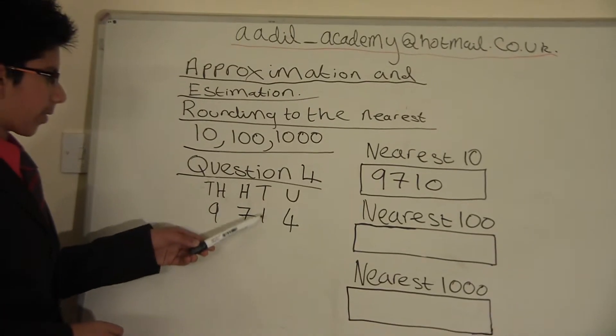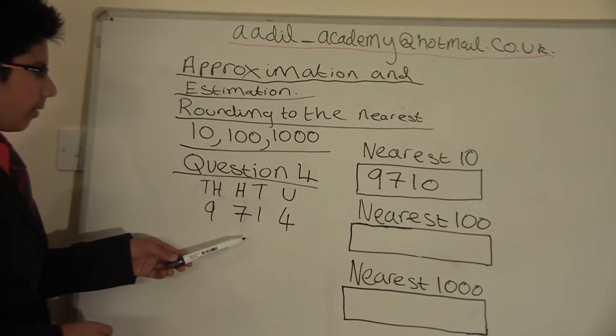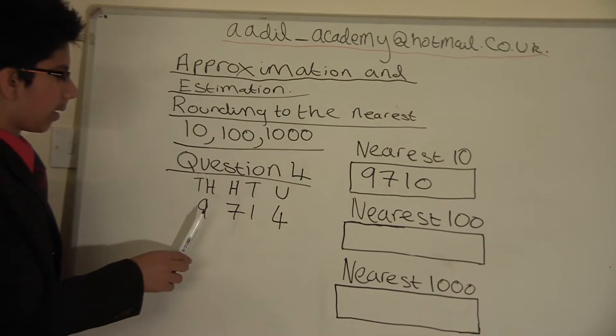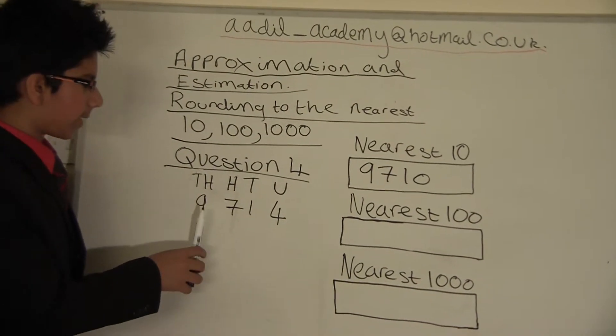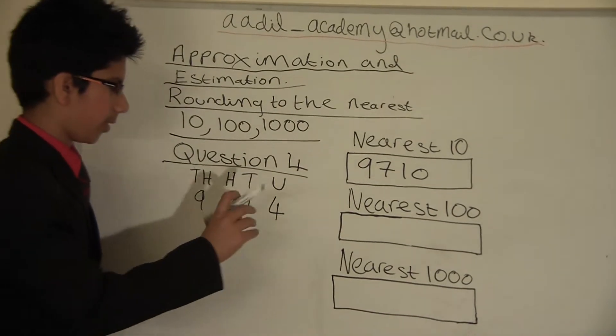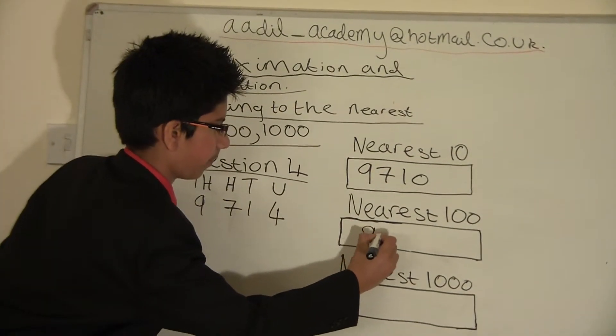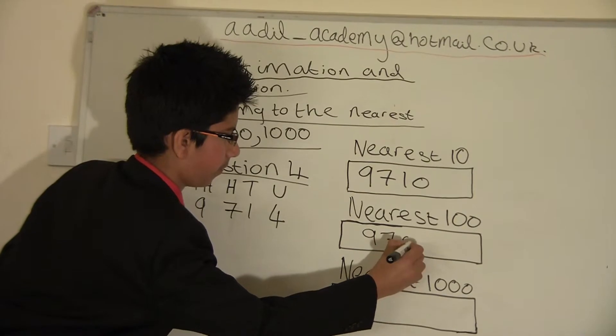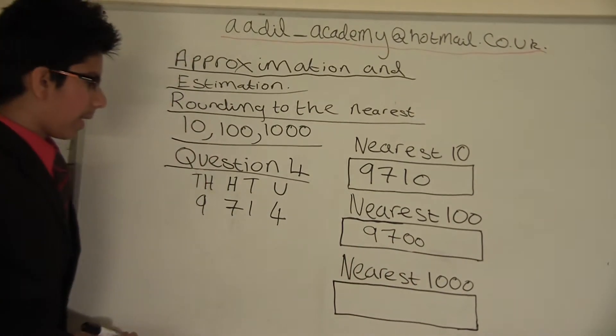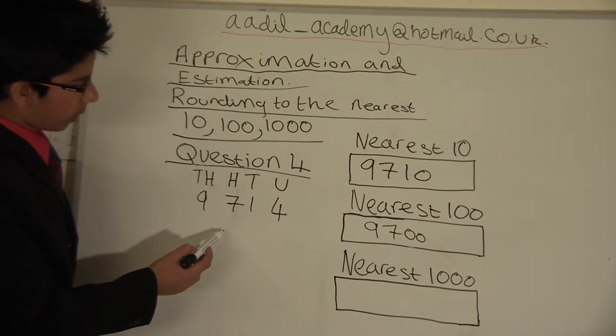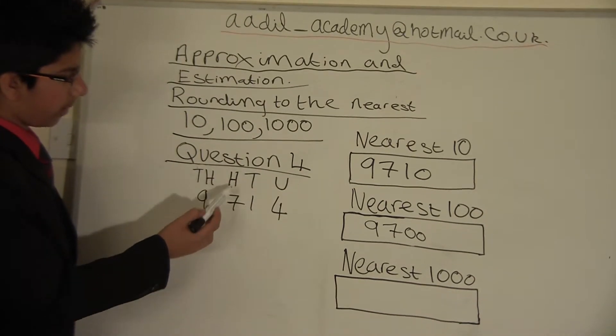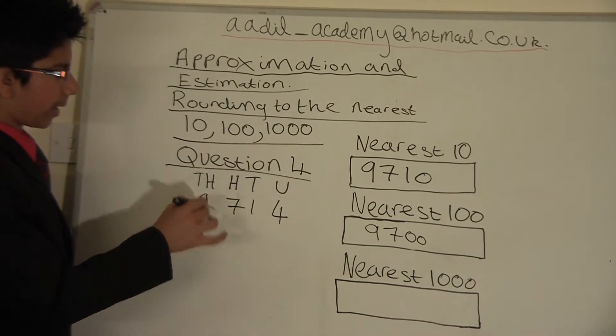We will look at the tens column and here we will round down, so our answer for the nearest 100 is 9700. To find the nearest 1000, we will look at the hundreds column and we'll round it up.